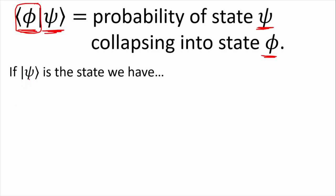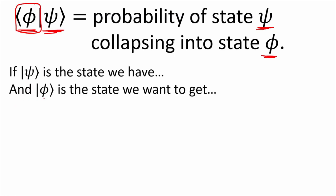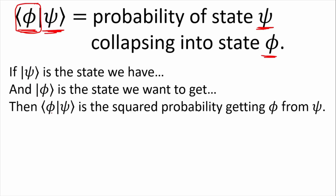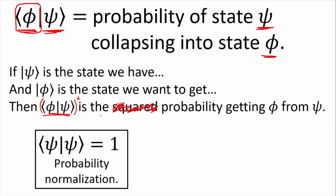If we're in state psi and phi is the state we want to get, the inner product gives the square root of the probability — you need to square it to get the actual probability. So this is not the squared probability; you need to square the inner product to get the probability. Sorry, I'm a bit rusty on my quantum mechanics there.